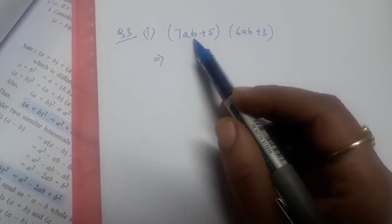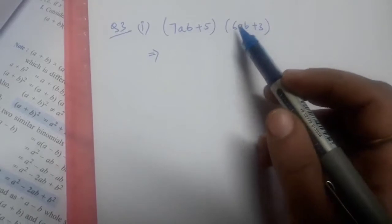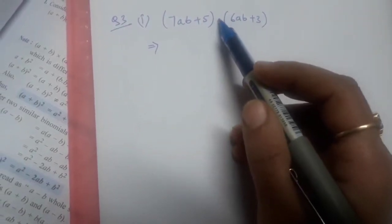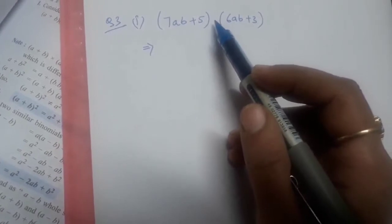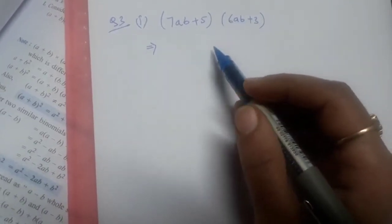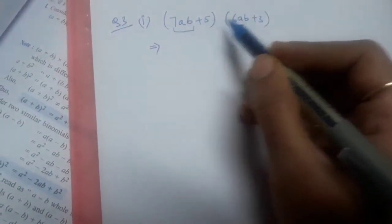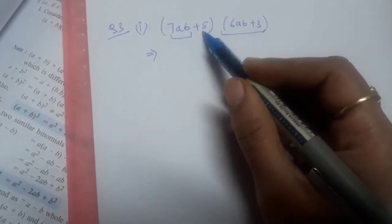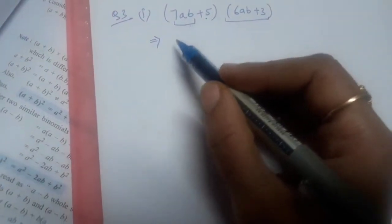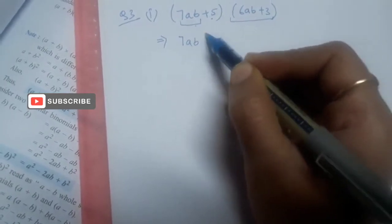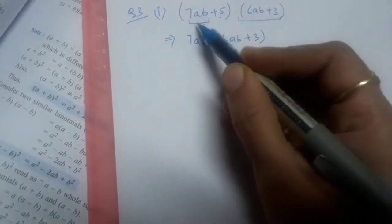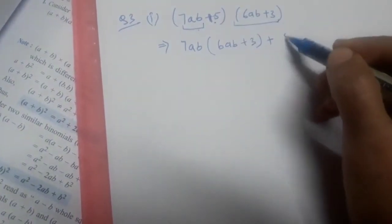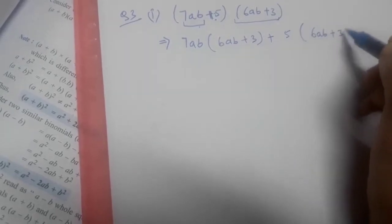So we have been given (7ab + 5) within one bracket and (6ab + 3) within another bracket. If two brackets are given and there is no sign between them, it means both brackets are getting multiplied. So first we will multiply 7ab with the whole (6ab + 3), then we will multiply 5 with the whole (6ab + 3). So first step: 7ab(6ab + 3) + 5(6ab + 3).